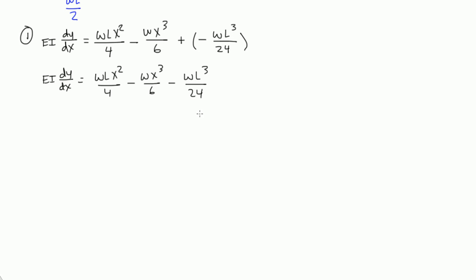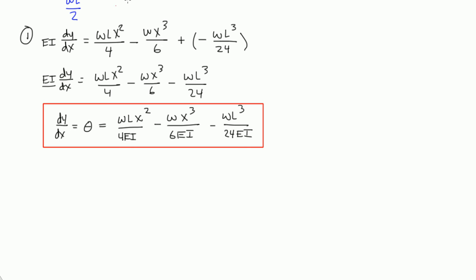And this becomes our equation for the slope. What we can do is we can divide this EI out and bring this down to the denominators for these three terms. And we'll get dy dx. And remember, dy dx is the same as our slope or our rotation. And that's equal to WLx squared over 4EI minus Wx cubed over 6EI minus WL cubed over 24EI. So I'm going to call this equation A.